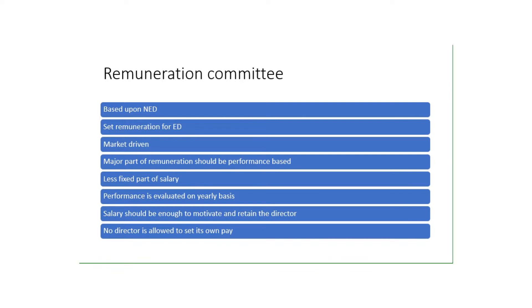The remuneration is divided into two parts: one is a fixed part and one is a performance-based part. The fixed part is the salary — a fixed amount received each month. The performance-based part is evaluated on a yearly basis; based on how good the performance is and a preset ratio, the performance-based remuneration is given. So these were some important points about the remuneration committee.